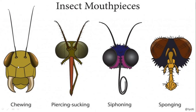Arthropods take their food by different methods using different types of mouthparts. The chewing type of mouthpart is seen in cockroach. The piercing or sucking type is seen in mosquito. The siphonic mouthpart is seen in flies. Sponging mouthparts are seen in some grasshoppers and other insects.